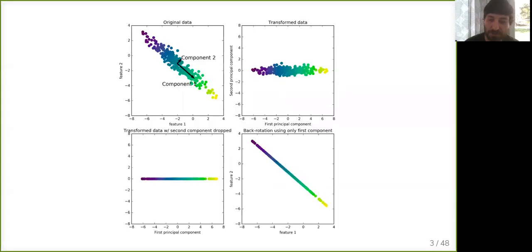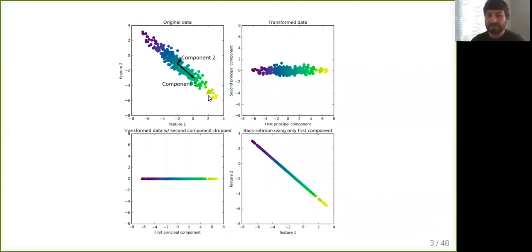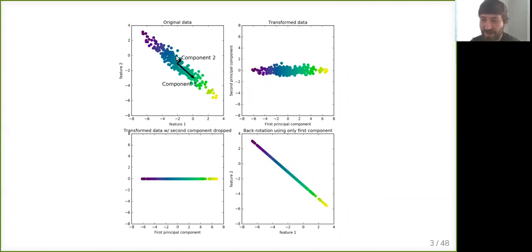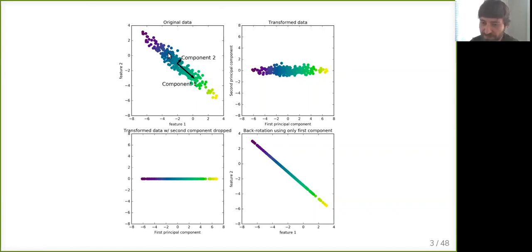As usual, I have a 2D visualization of what the algorithm does. Here I'm illustrating principal component analysis. In the first picture, we can see a Gaussian blob that's elongated in some direction. The idea of PCA is to find the directions with maximum variance — the directions in which the data is stretched the most, or that explain most of the variance in the data. So you find the first component that has the most variance, called component one here — the first principal component.